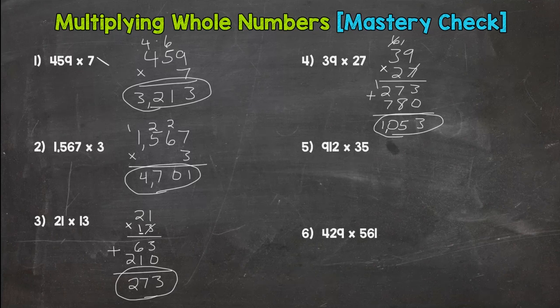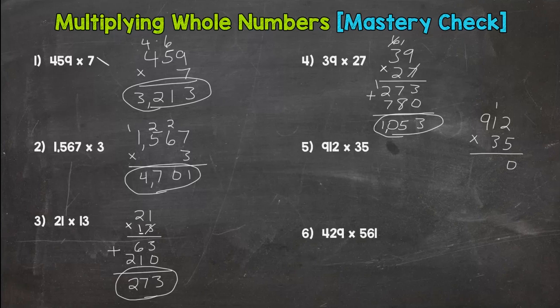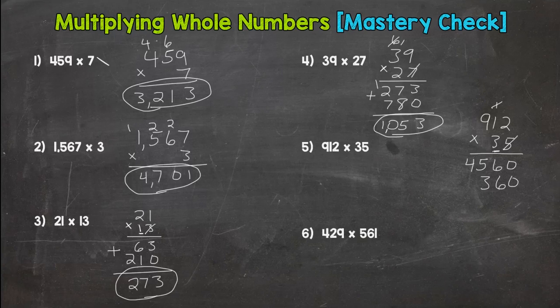Alright, next problem. 912 times 35, so a three by two. I'm going to write it over here so I have plenty of room. 5 times 2 is 10. 5 times 1 is 5 plus 1 is 6. 5 times 9 is 45, done with the 5. Done with the 1. Placeholder zero because this is valued at 30. 3 times 2 is 6, 3 times 1 is 3, and then 3 times 9 is 27.